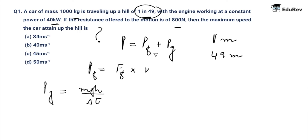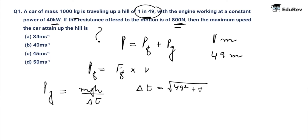From the given data, the force of friction is 800 newtons and mass is 1000 kg. Delta T is going to be under root of 49 squared plus 1 squared upon V, which is approximately 49 upon V.